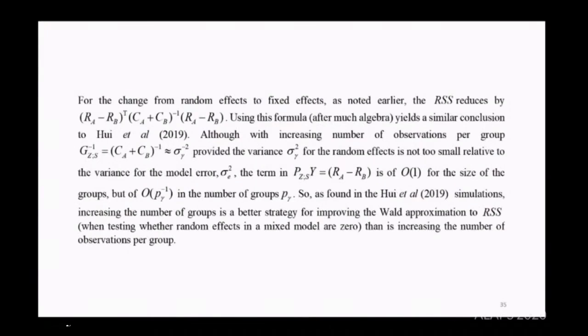The change from random effects to fixed effects, RSS reduces by this linear form. Using the formula here, we get to a very similar conclusion to Hui et al. With increasing numbers of observations per group, this function CA plus CB to the minus one approximately equals the inverse of the variance of the random effect, provided the variance is not too small relative to the variance of the model error. Due to the order of the various effects, the conclusion that Hui et al came to is pretty much the conclusion that comes out of this. In fact, there's now an explicit form for the accuracy of the approximation.